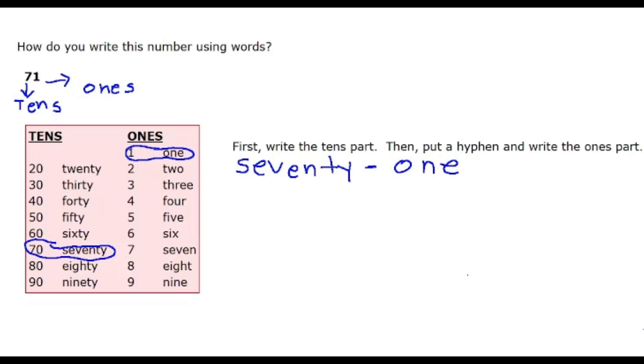There is another little step here that you might have a question about. What if there is no ones part? So say the question was that we had to write, instead of 71, it looked like this, which was 70. If there is no ones part, then you only write the tens part. So to write out 70, you just write it like this. You don't need a hyphen, and you're done.